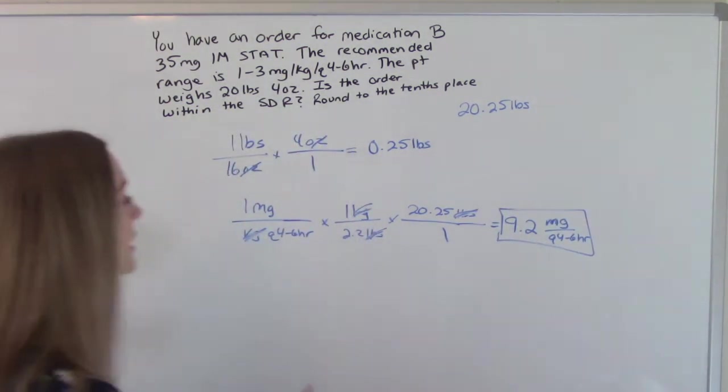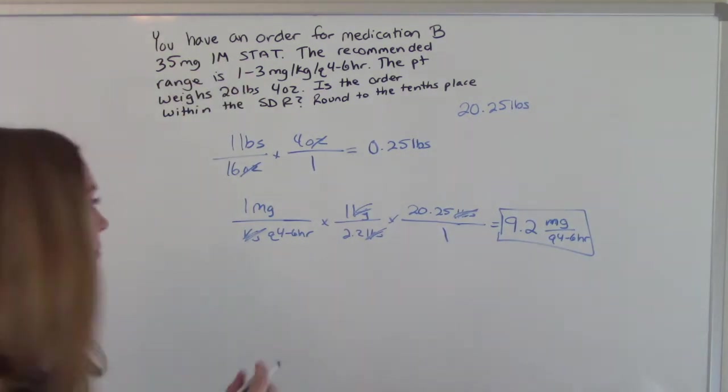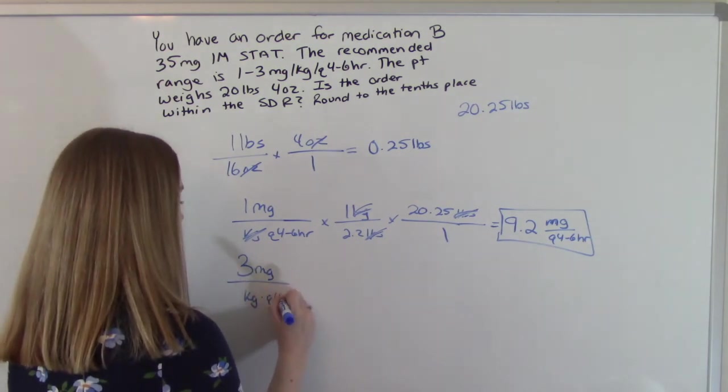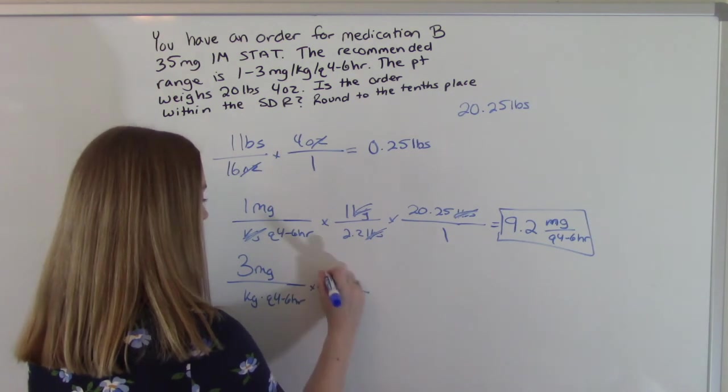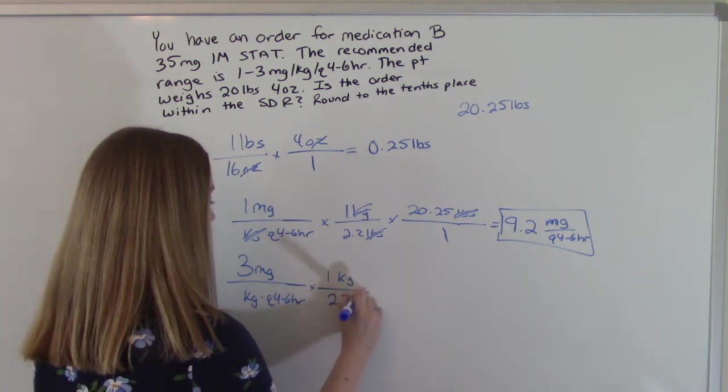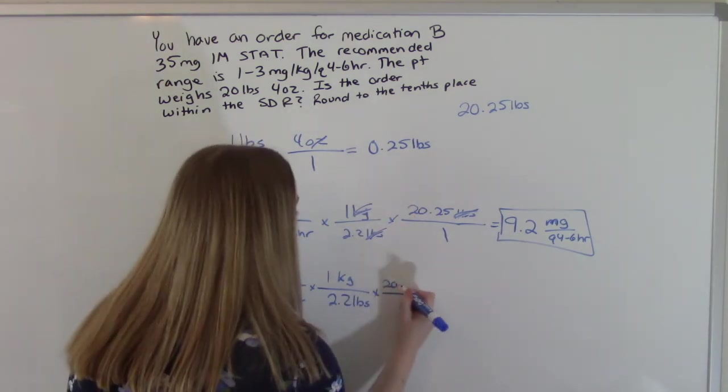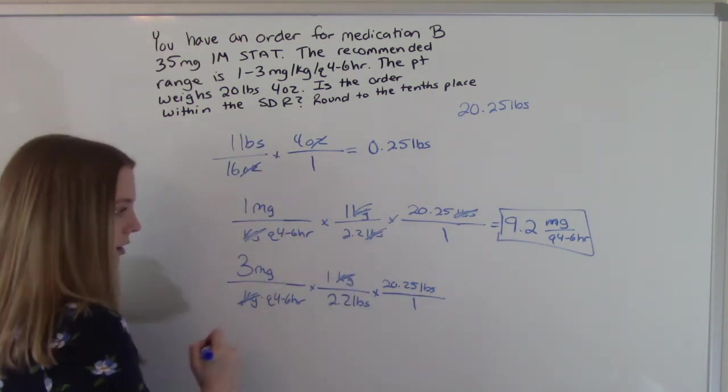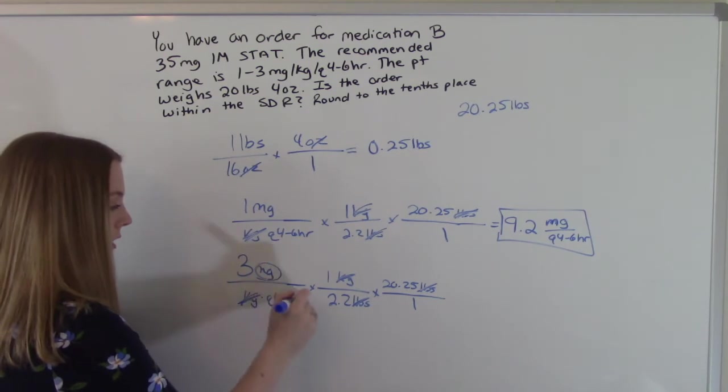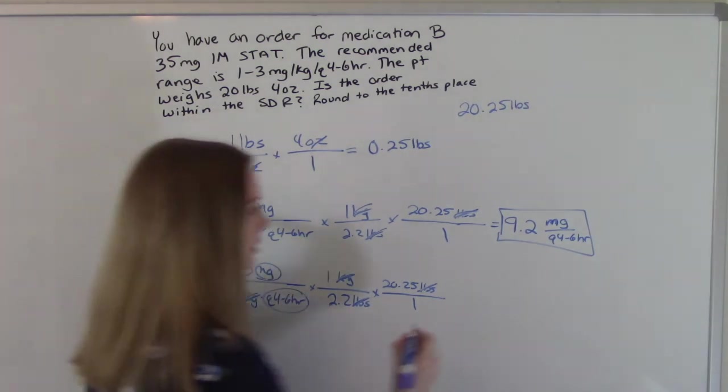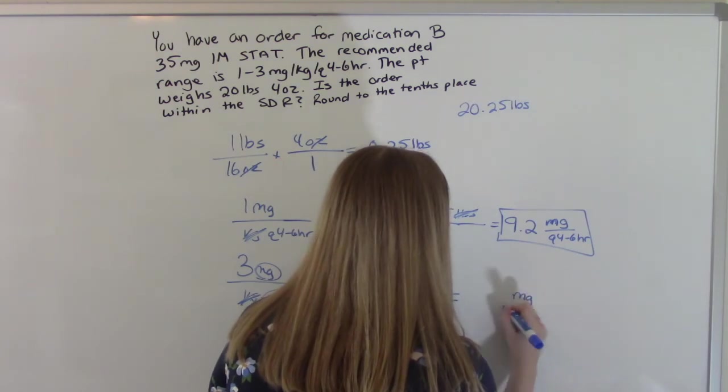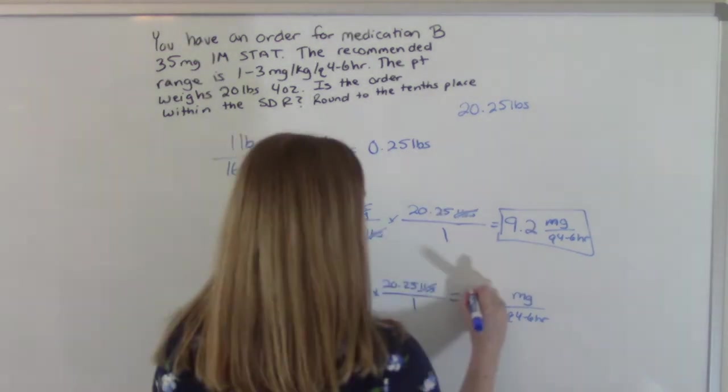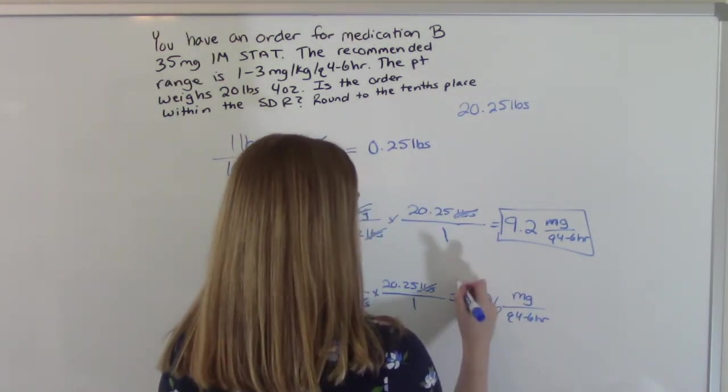Now let's do our maximum. Same equation except now we're using the three. So it's three milligrams per kilogram Q four to six hours. And then we have our converting factor. And then our patient is still 20.25 pounds. So kilograms cancel. Pounds will cancel. Milligrams on top Q four to six hours on the bottom. Punch it in and do the math and you get 27.6. So this is our maximum.